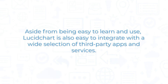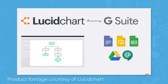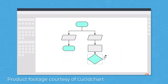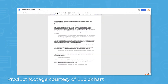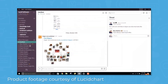Aside from being easy to learn and use, Lucidchart is also easy to integrate with a wide selection of third-party apps and services. For example, it offers native integrations for popular apps like G Suite, Jira, and Confluence, Microsoft Office, LinkedIn Sales Navigator, Slack, GitHub, and more. Partner software companies have also built integrations so their solutions can work with Lucidchart.